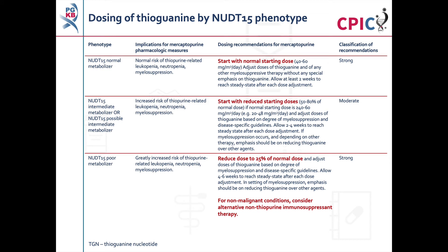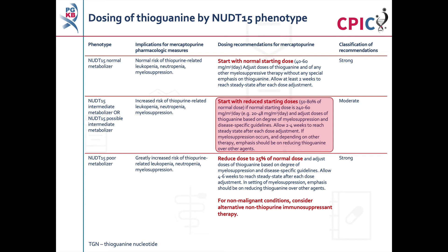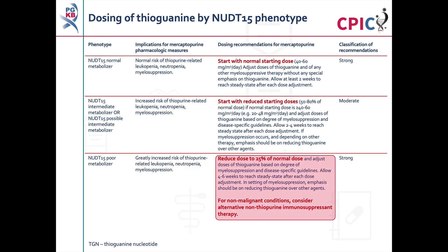These are the CPIC dosing recommendations for thioguanine by NUDT15 genotype. Patients who are NUDT15 normal metabolizers are at a normal risk of thiopurine-related myelosuppression and can be given the normal starting dose of thioguanine — a strong recommendation. Patients who are NUDT15 intermediate metabolizers or possible intermediate metabolizers are at an increased risk of myelosuppression and should be started at a reduced dose — a moderate recommendation. Patients who are NUDT15 poor metabolizers are at a greatly increased risk of myelosuppression; in cases of malignancy, patients should be started at 25% of the normal dose, and alternative therapy should be considered for non-malignant conditions. This is a strong recommendation.